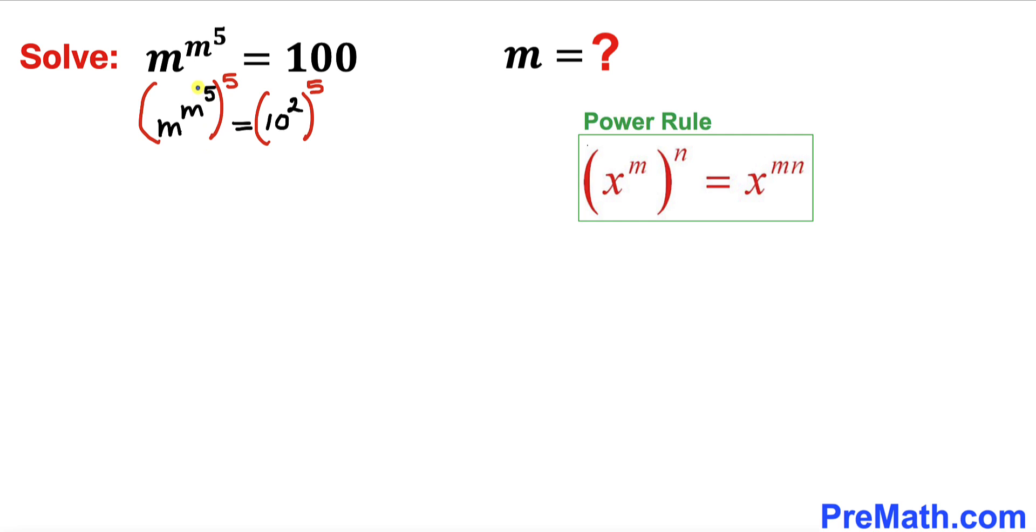So if I call on the left-hand side this whole thing m and this n, then this left-hand side could be written as m to the power of 5 times m to the power of 5.